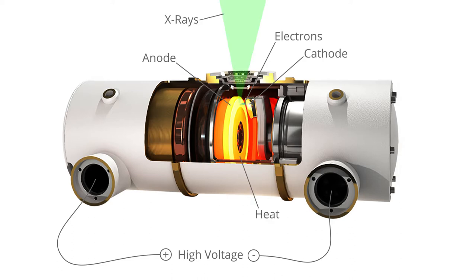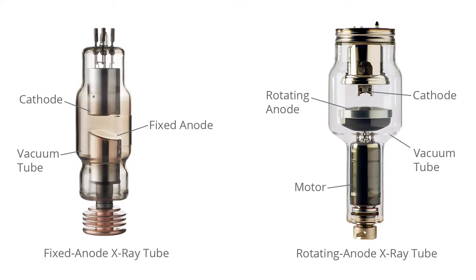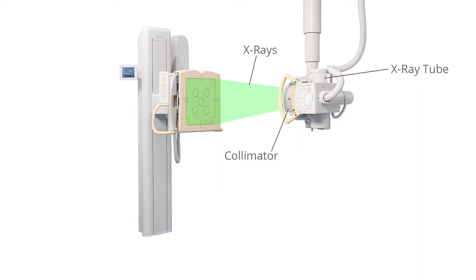The x-rays go through the patient and some of the radiation is absorbed. Denser structures such as bone absorb more x-rays than softer structures. The voltage of the x-ray tube and the material of the anode determine the energy of the resulting x-rays. The collimator focuses the x-ray beam by allowing only x-rays traveling in a certain direction to pass through.